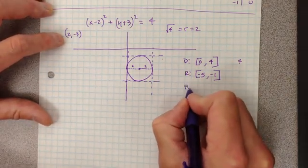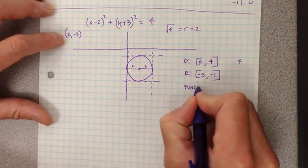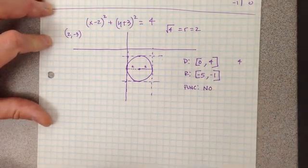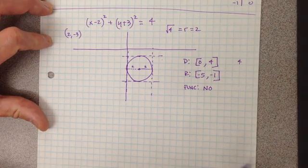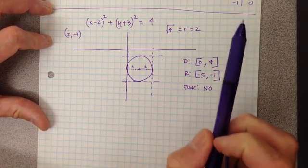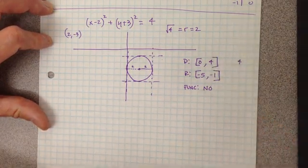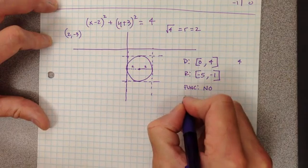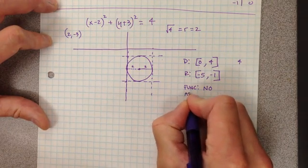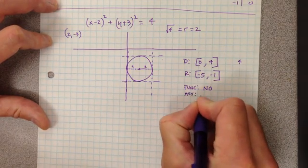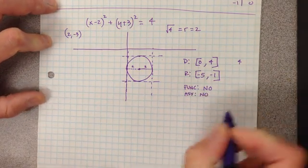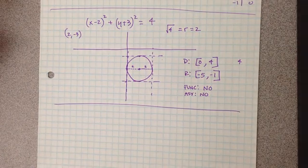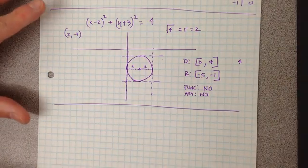Is it a function? No. I talked about that earlier with the xy chart — one x-value gives two different y-values. Does it have asymptotes? No, it does not. That's one example. Let's take a look at another one and get comfortable graphing these things.